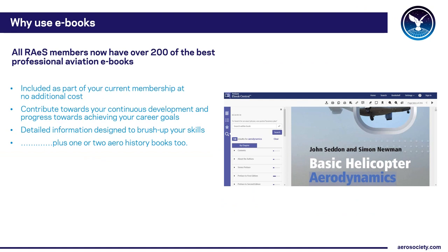As a Royal Aeronautical Society member you have access to over 200 of the best professional aviation e-books included as part of your current membership. These books are a great source of detailed information, a perfect tool for brushing up your knowledge or exploring new areas, thereby contributing towards your continuous professional development and helping you progress to your career goals. It's not all work as there are one or two aero history books as well.